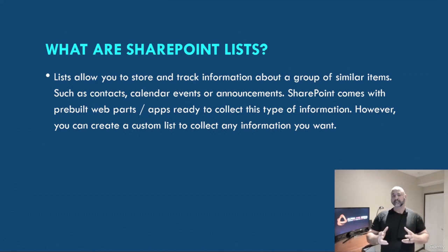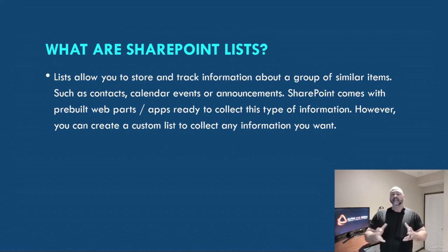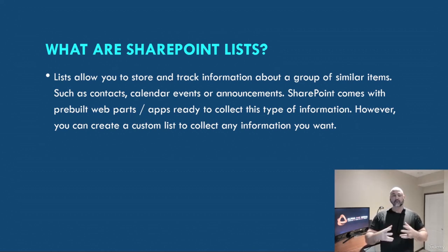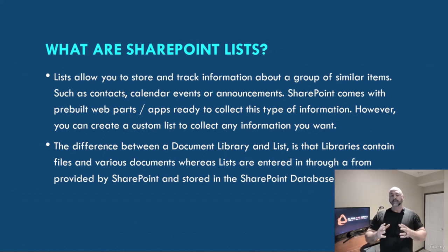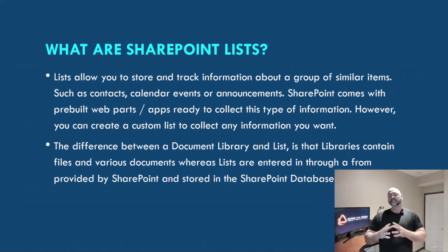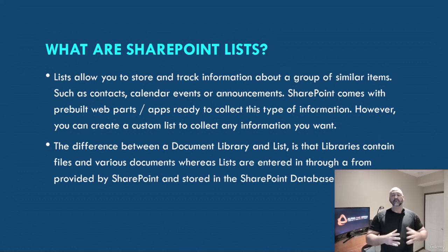Lists allow you to store and track information and group similar items such as contacts, calendar events, and announcements. SharePoint comes with about ten prebuilt web parts — they're ready to collect information. You can add custom columns and views just like you can in document libraries — it's all the same. You also have the ability to create a custom list to hold any type of information. The difference between a document library and a list is that libraries contain files — your Excels, PowerPoints, etc. — whereas lists are entered through a form provided by SharePoint and stored in the SharePoint database.